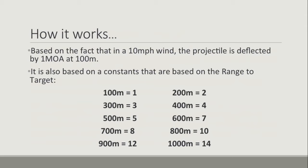At 100 meters the constant is 1, at 200 meters the constant is 2, and so on through to 500 meters where it's 5. Once we hit 600 meters, things start to change a little bit. At 600 meters the constant becomes 7, at 700 meters the constant is 8, at 800 meters the constant is 10, at 900 meters it's 12, and at 1,000 meters it's 14.